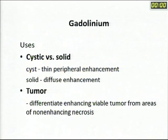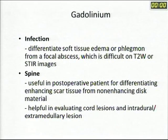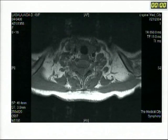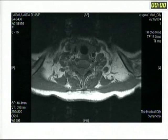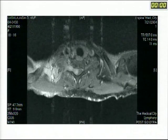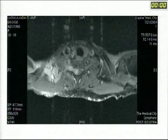Why do we advise post-contrast MRI? You use it to differentiate cystic versus solid tumor, to differentiate tumor from non-enhancing necrosis, to differentiate soft tissue edema from focal abscess formation. Contrast is particularly useful to differentiate enhancing epidural scar tissue from non-enhancing disc material — very important in post-operative spinal cases. It is also helpful for locating cord lesions and intradural extramedullary lesions. For example, a neurofibroma invisible on plain MRI becomes clearly visible as a dumbbell-shaped enhancing tumor after gadolinium.